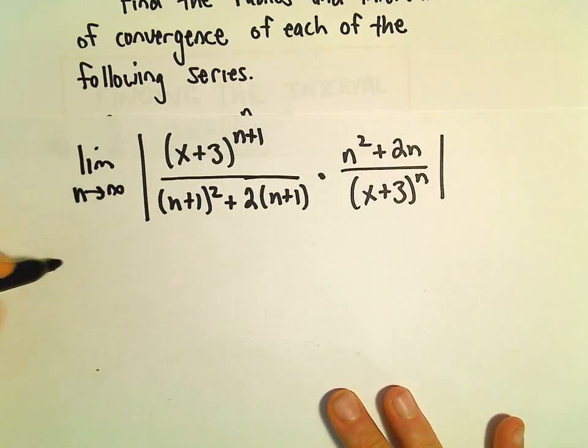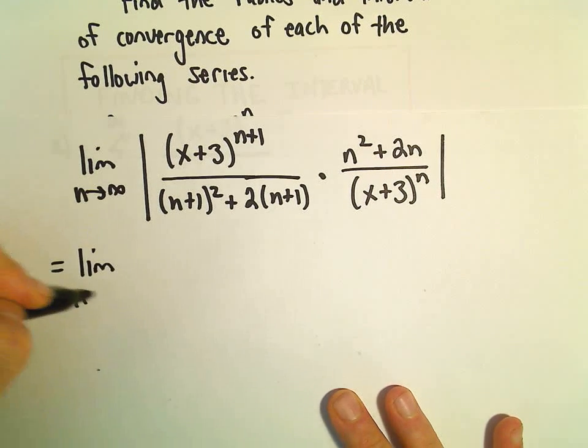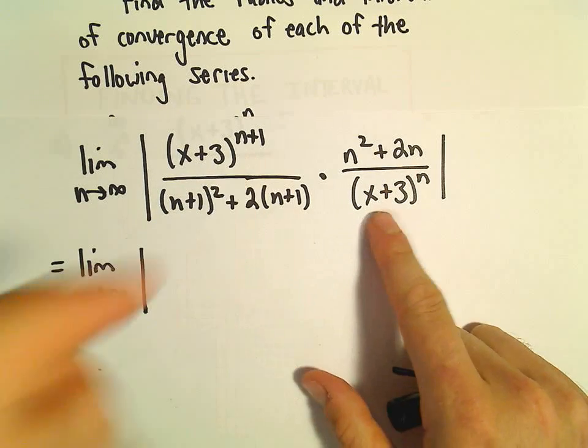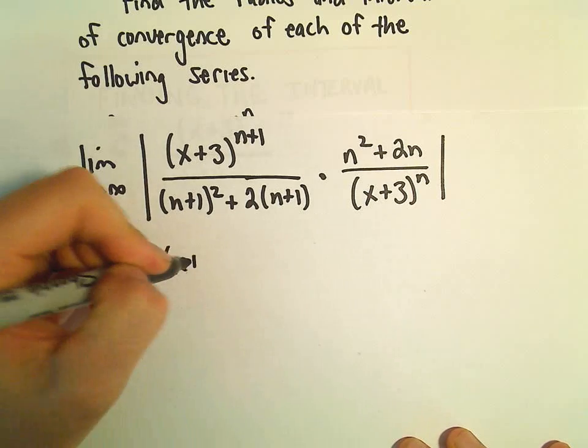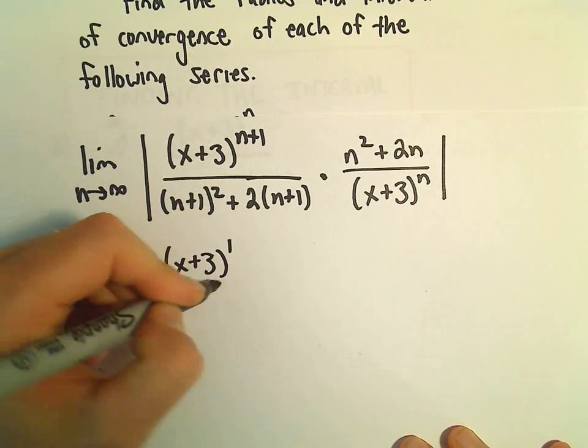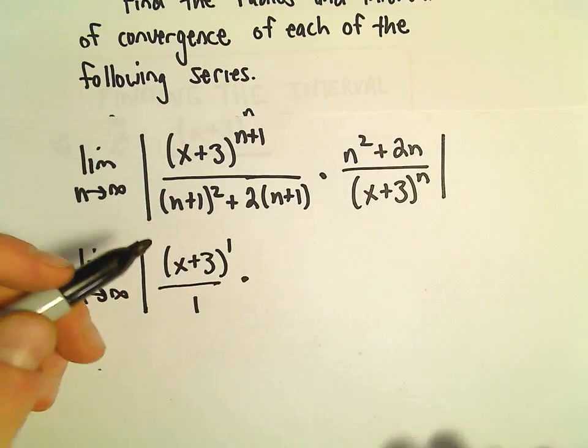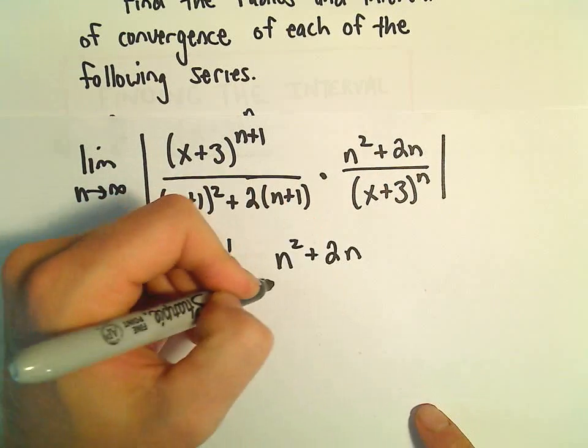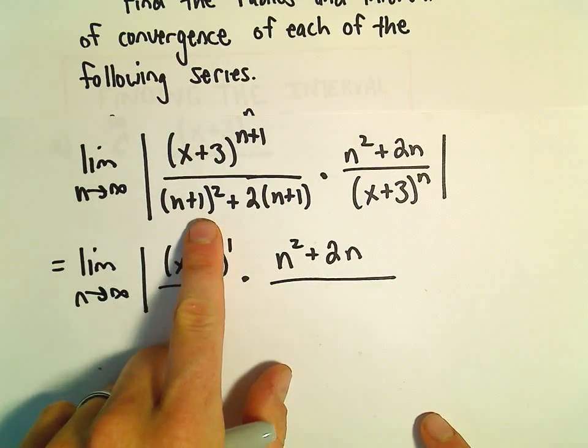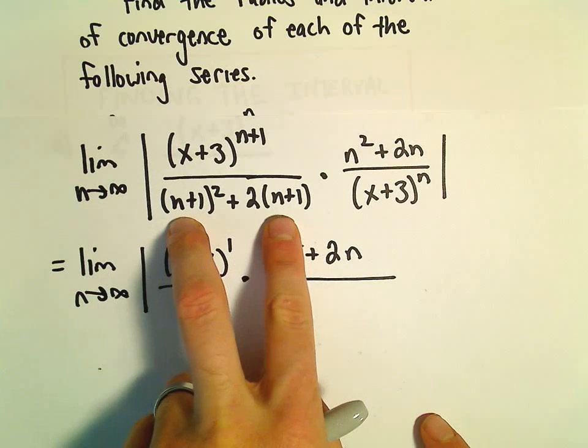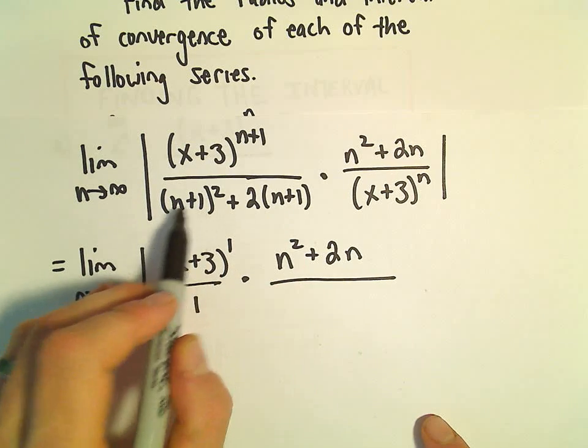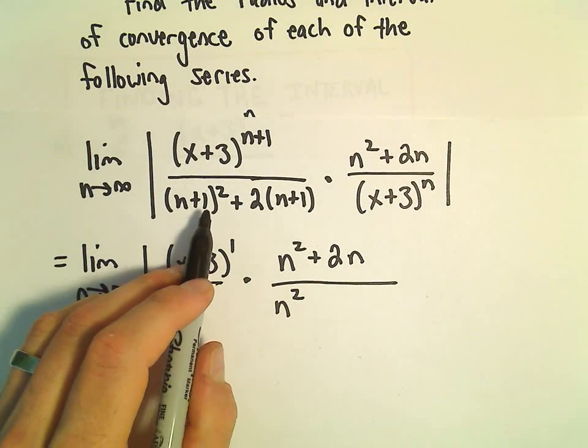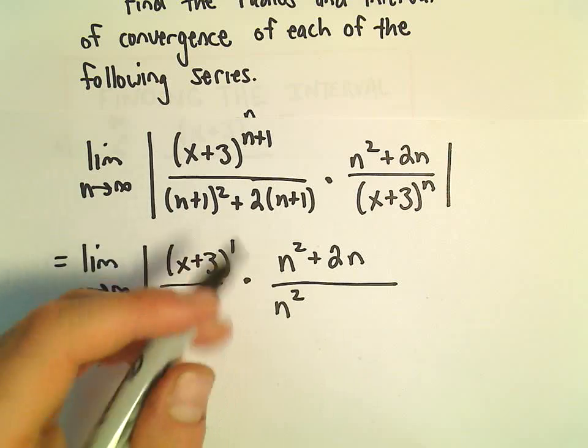And now just simplification. So, we have x plus 3 to the n plus 1 over x plus 3 to the n. We'll have an x plus 3 to the first in the numerator. And then we're going to have n squared plus 2n. Notice in the denominator, if we expand out some stuff, we'll eventually have an n plus n times n plus n. That'll give us an n squared term. But then everything else will either involve n or constants.